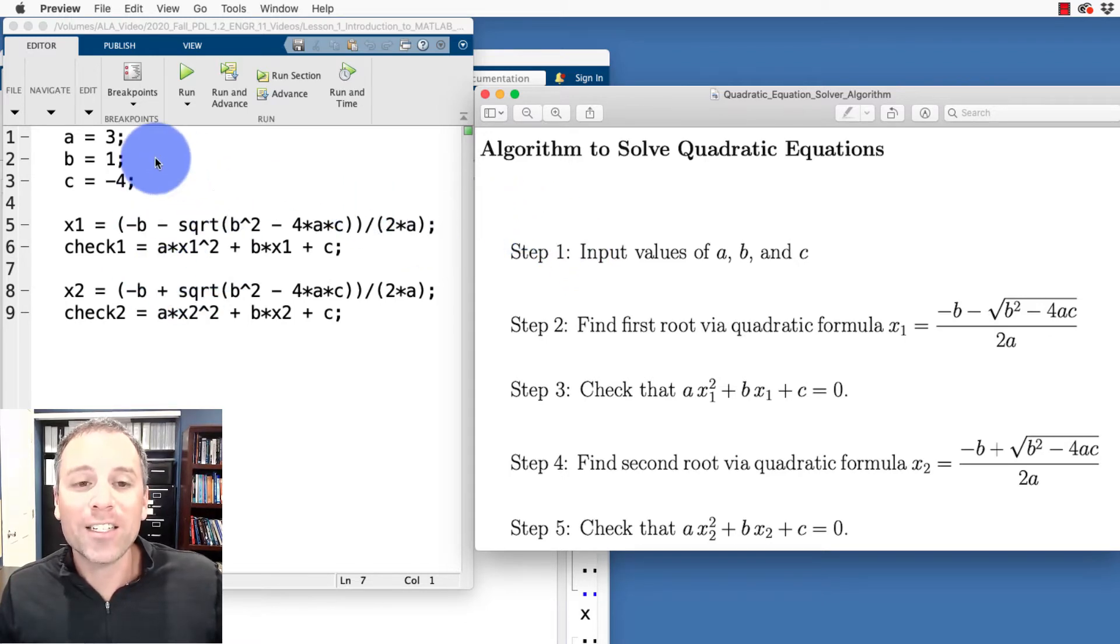We can see right next to the code on the left-hand side, we actually have an algorithmic statement, a step-by-step analysis of the type of work we're going to accomplish with that code. Specifically, we could call this an algorithm to solve quadratic equations.